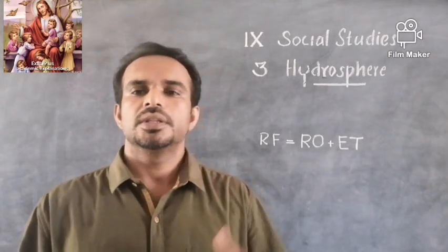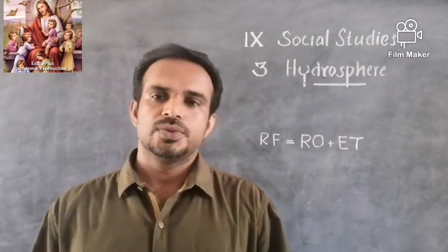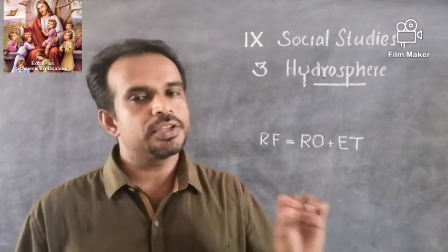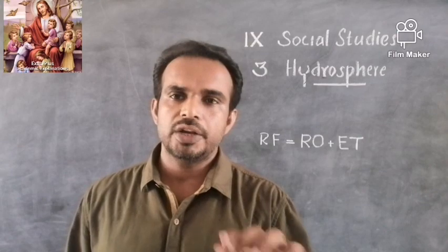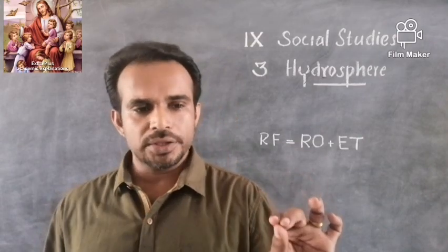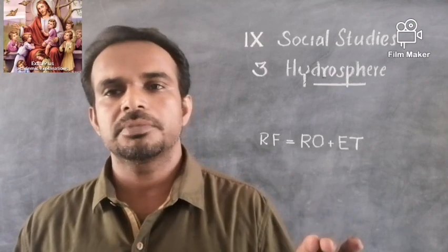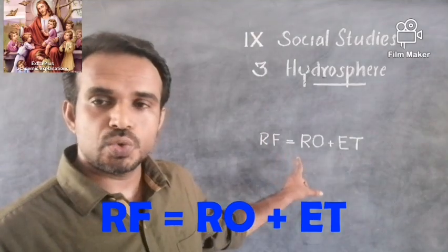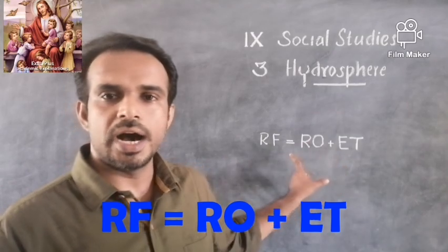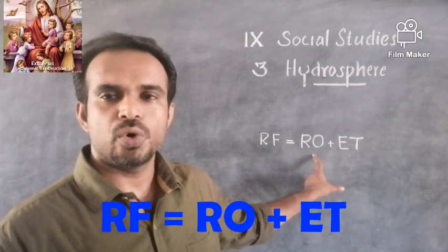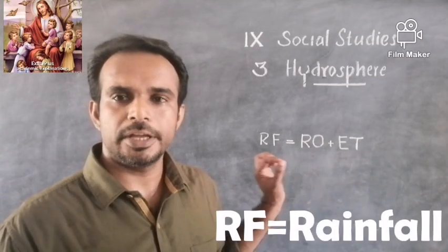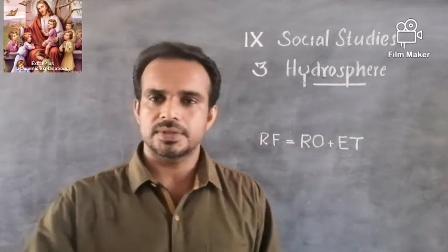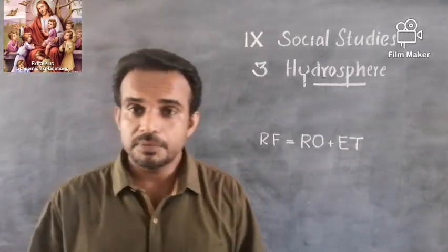In today's class we will discuss two major topics: the hydrological cycle and water sources. The hydrological cycle can be mathematically expressed as: Rainfall equals Runoff plus Evapotranspiration, or RF = RO + ET, where RF is rainfall, RO is runoff, and ET is evapotranspiration.